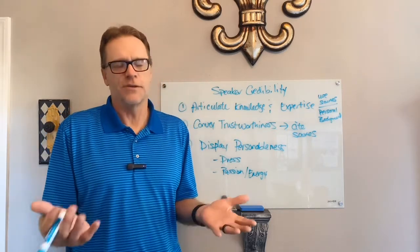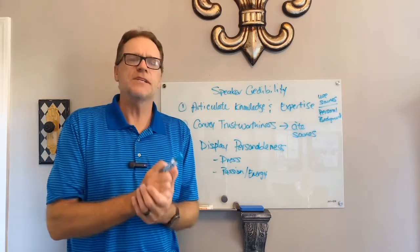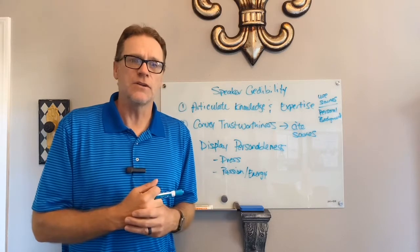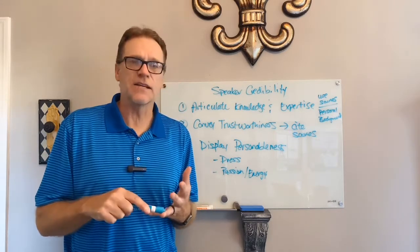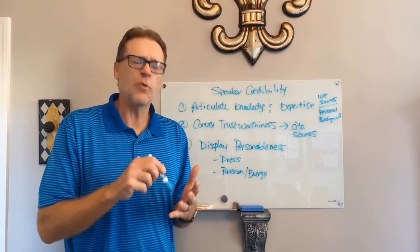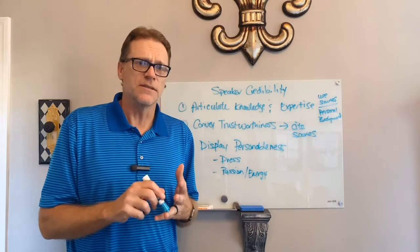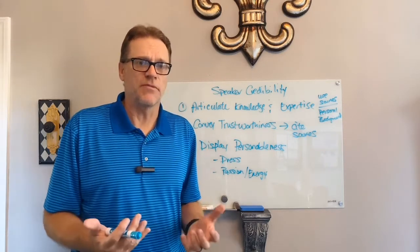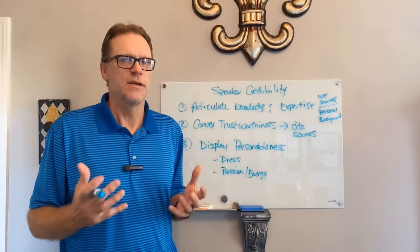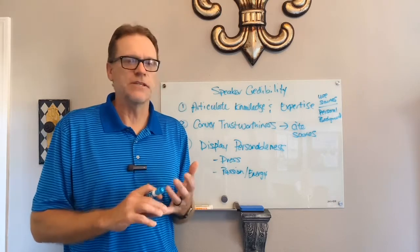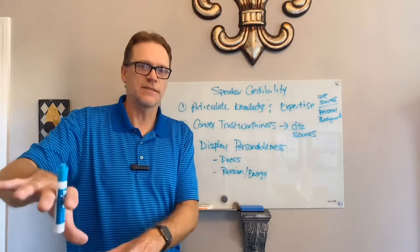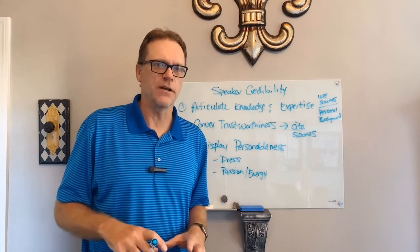Being trustworthy is when you do cite your sources — you let people know this is the information I looked up and here's who I got it from. It's important they know who you got it from and what the date of that source is. If I'm using 'my neighbor Bill told me,' that's not quite as credible as saying the Center for Disease Control and Prevention. We need to know who it is and how recent it is. We'll cover this more in the next chapter on doing your research.